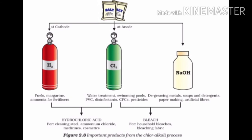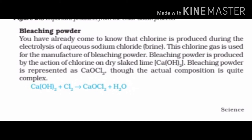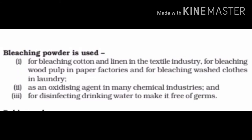Chlorine and sodium hydroxide together are used to make bleach for household bleaches and bleaching fabric. For making bleaching powder, we use calcium hydroxide solution or slaked lime and pass chlorine gas over it, forming calcium oxychloride, which is bleaching powder. Uses of bleaching powder include bleaching cotton in textile industries, bleaching wood pulp in paper factories, as an oxidizing agent, and for disinfecting drinking water.